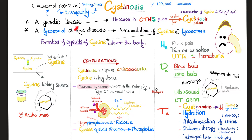Cystinosis is a genetic disease. What's the pattern of inheritance? Autosomal recessive, which means consanguinity. Where is the tight-knit community? Brittany, France — that's why cystinosis is more common there. The mutation is in the CTNS gene, which stands for cystinosis. Genes code for proteins, so normally a normal CTNS gene should code for a normal cystinosin protein.